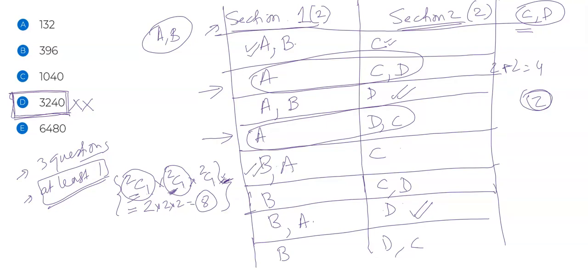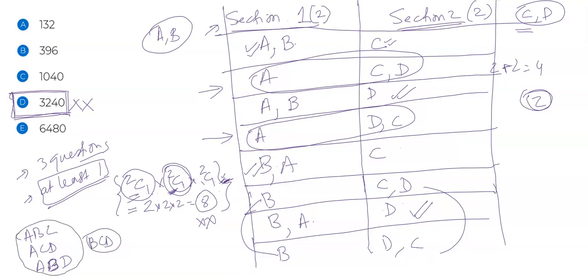So when you write 2C1 × 2C1 × 2C1, you are implicitly considering the order of choosing, which is not required. Because of this, the order comes into the picture and you get an incorrect answer. The actual unique cases are only four: A B C, A C D, A B D, and B C D. That's it — only four cases, not eight.